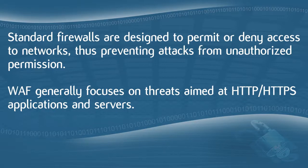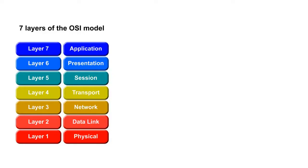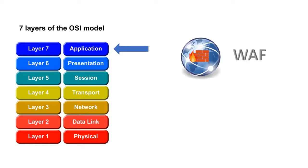The fourth difference is that both WAFs and firewalls focus on different layers of the OSI model. The OSI model is a graphical representation of the inner workings of a standard network — it could be considered the encyclopedic map of the network. Firewalls typically focus on layer 3, the network layer, and layer 4, the transport layer. Layer 3 concerns the transfer of packets between nodes; layer 4 concerns the transfer of data to a destination host. WAFs focus primarily on layer 7, the application layer, which is closest to the user — the software interface with which the user is interacting.